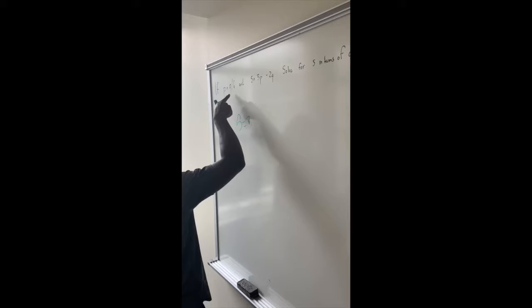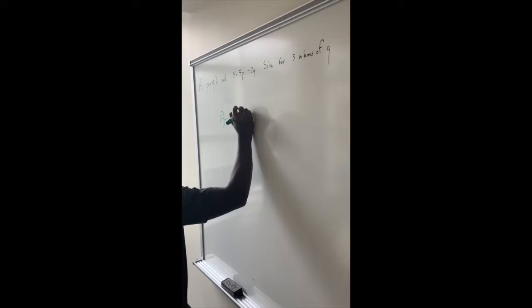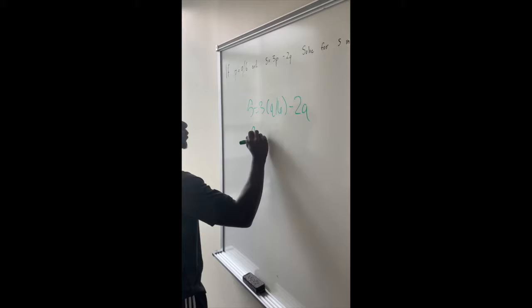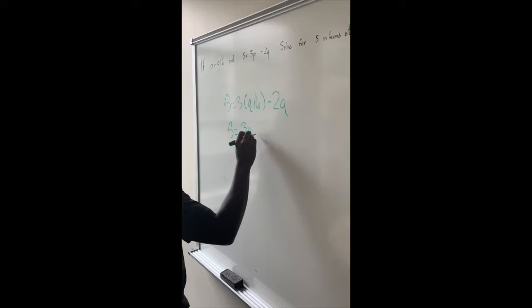So, we have to plug in this for P, so then that would be Q divided by 6, minus 2Q. Next step, we have to distribute 3 to the Q divided by 6, so this would be 3Q divided by 6, minus 2Q.